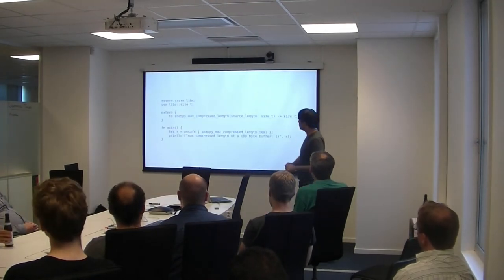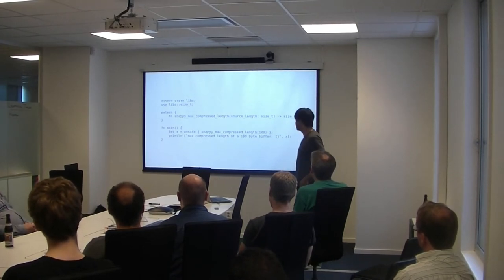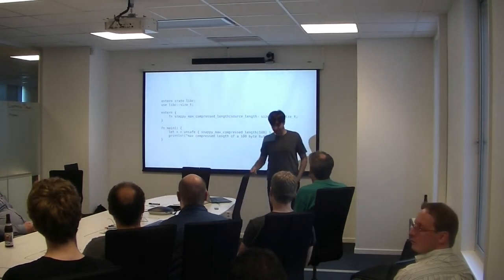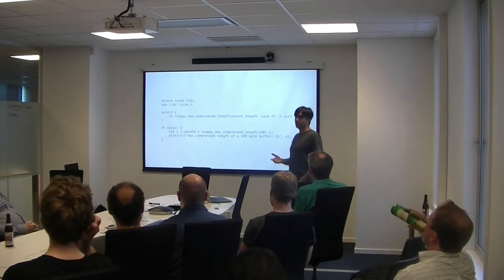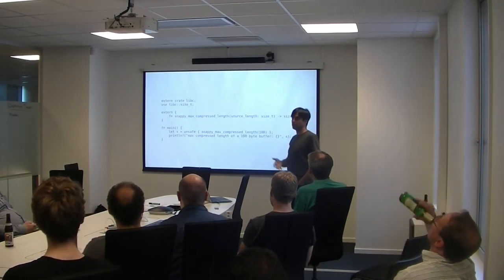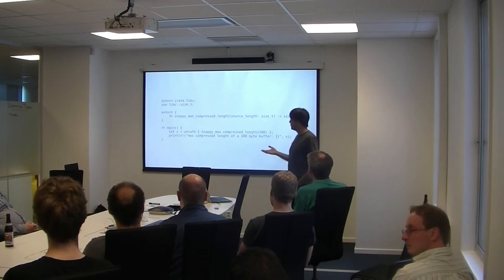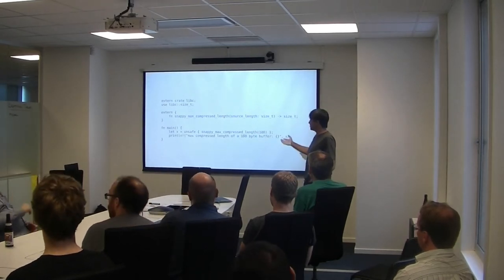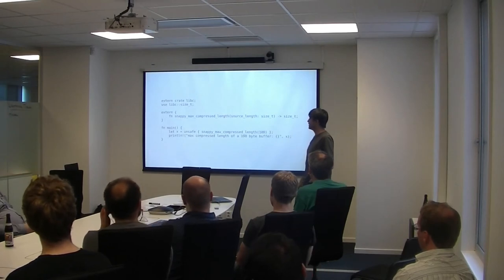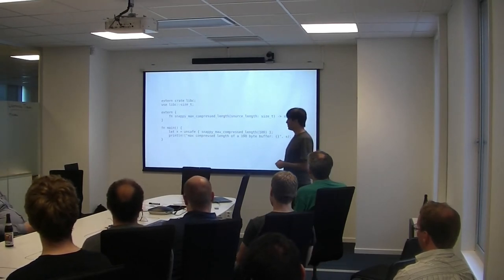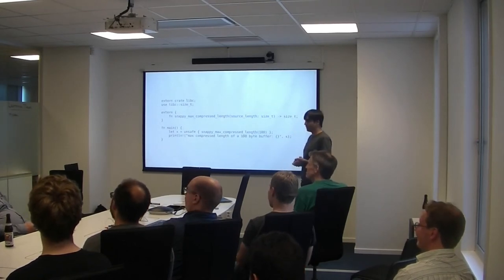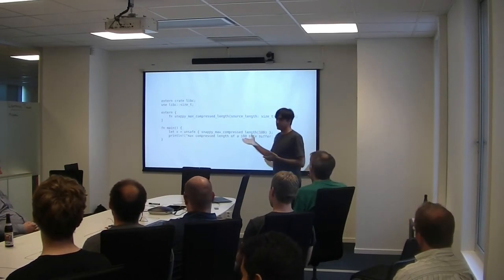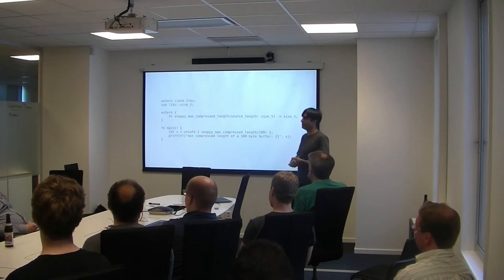Rust has good FFI. As one gentleman pointed out, you can declare unsafe code as unsafe. If you're calling out to C, the Rust compiler has no idea whether it's safe or not, so the safe assumption is that it's unsafe. If you call to C or write any unsafe code, you have to declare that code block as unsafe. Then the Rust compiler knows this is the unsafe part and lets you do things it otherwise won't. So you can bypass safety when you need to, but generally you don't.